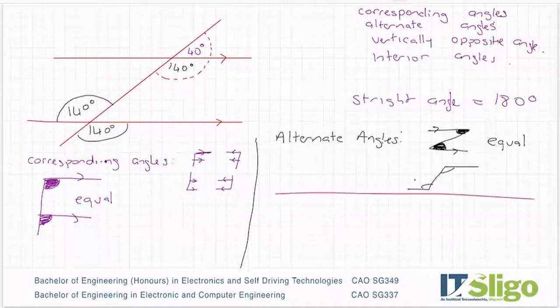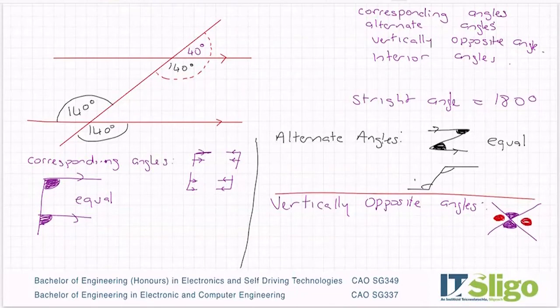Vertically opposite angles then. So you're looking out for the letter X in this one. So this angle here is vertically opposite this one down here. Or of course, I could say that this one here that I'm coloring in red is also vertically opposite this one. So vertically opposite angles are also equal in measure. And it's the easiest one, I think, to spot.